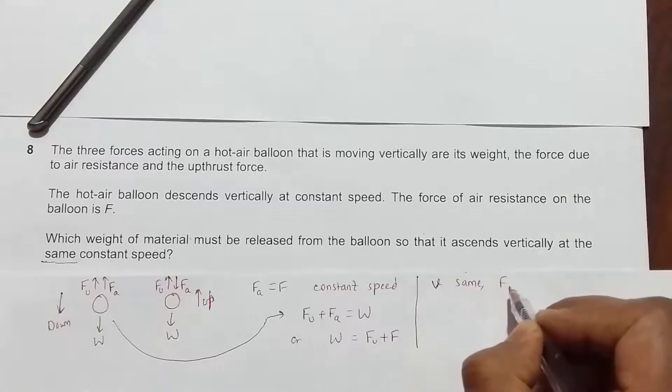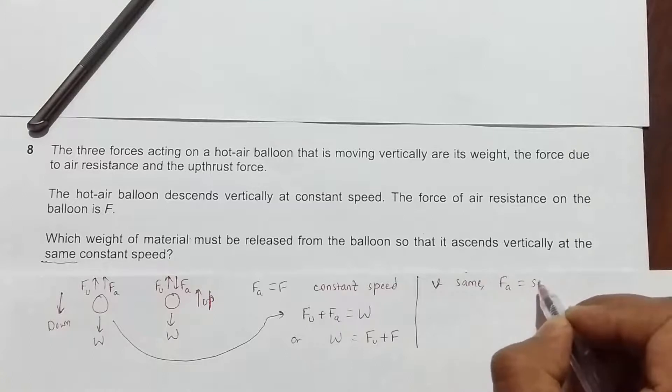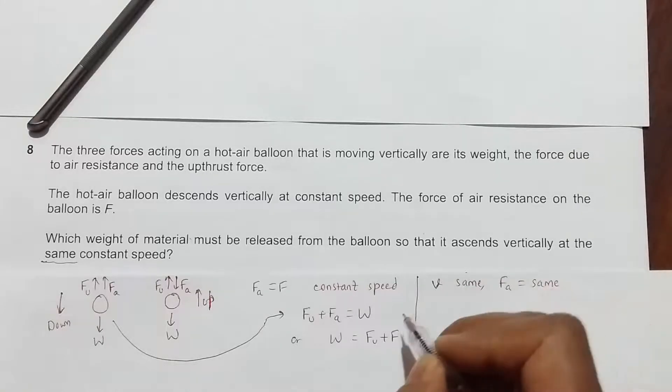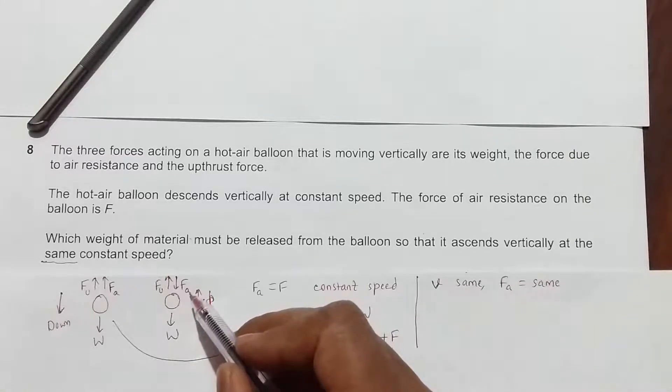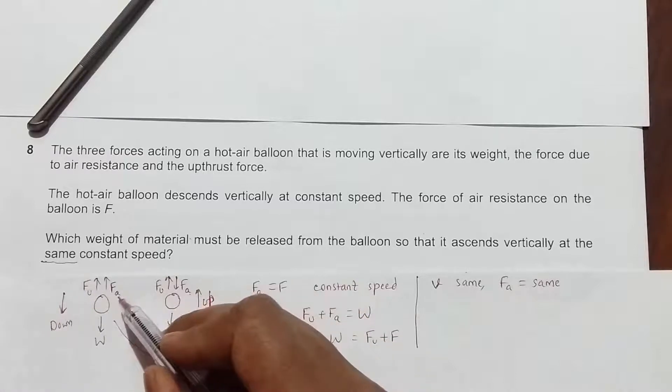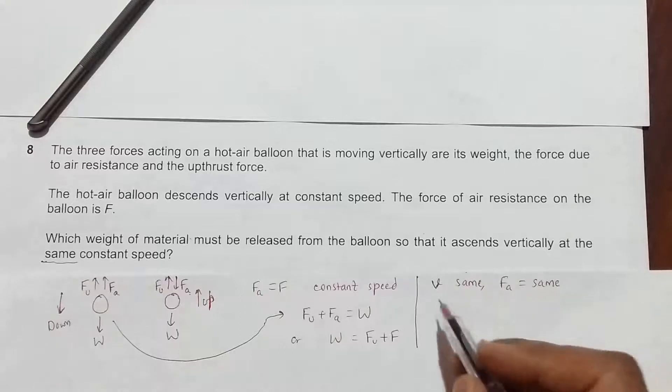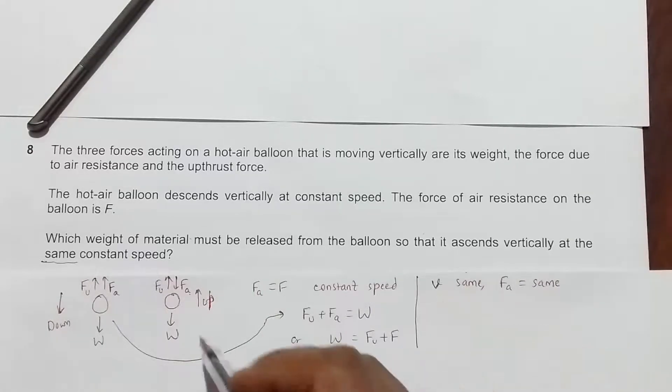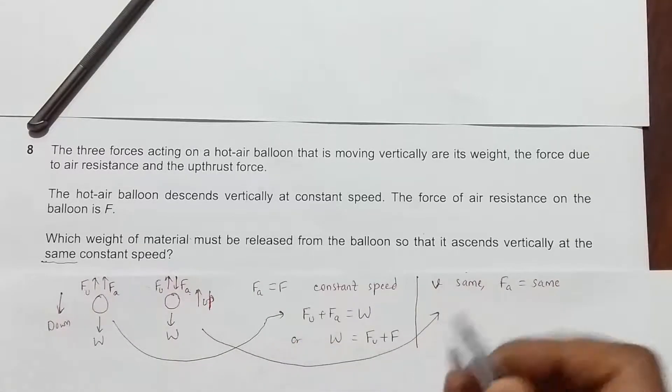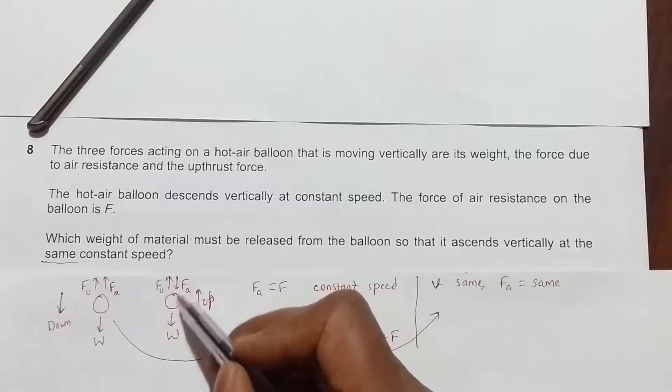If the velocity is the same, the force due to air resistance should also be equal to the same value. So now this F_A here should be the same as this F_A because it depends on the velocity and the velocity is same.